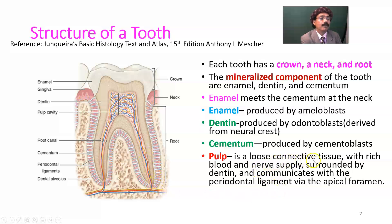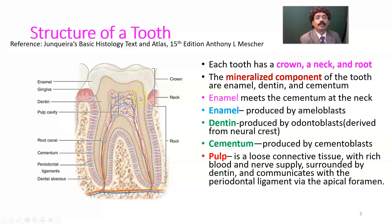Pulp is a loose connective tissue with rich blood and nerve supply. It also contains some lymphatics, is surrounded by dentin, and communicates with the periodontal ligament via the apical foramen. Enamel is produced by ameloblasts, dentin is produced by odontoblasts, and cementum is produced by cementoblasts.